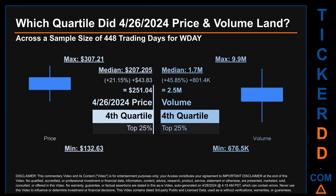Hello, my name is Maria. Which quartile did April 26, 2024 price and volume land in? Across a sample size of 448 trading days, the maximum end-of-day price for WDAY was $307.21 while the minimum was $132.63. April 26, 2024's price of $251.04 landed within the fourth quartile, meaning it was within the top 25% of all sampled end-of-day prices. The day's volume also landed within the fourth quartile, marking it within the top 25% of all sampled daily volume, which saw a max of 9.9 million and a minimum of 676.5 thousand.